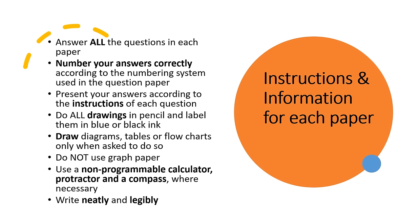Ensure that you have a pen, pencil, and a ruler, as you might be asked to make a drawing. Draw diagrams, tables, or flow charts only when asked to do so, or else you will forfeit the marks. In Life Sciences, we do not use graph paper. Ensure that you have a non-programmable calculator so that you can do any calculations. A protractor and a compass, in case you are asked to draw a pie chart or a circle diagram. And ensure that you have a ruler. Write neatly and legibly.